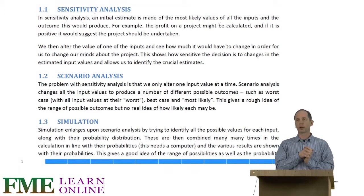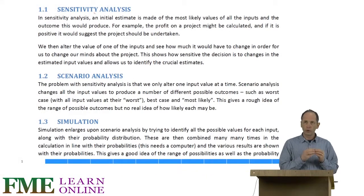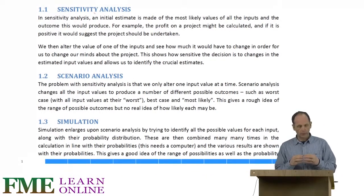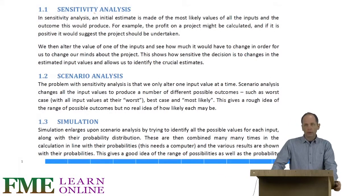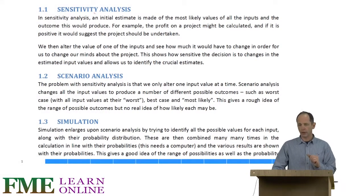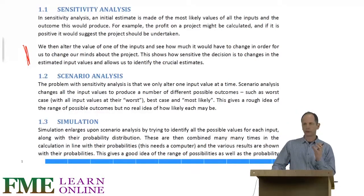For example, we might estimate the profit on a project by looking at the costs and revenues involved. However, what we then need to do is identify which of those inputs are the most crucial ones — the ones which, if they were to change, would quite dramatically change the profit and hence our decision on whether to go ahead with the project. We alter one of the inputs at a time and see how much we have to change it in order to make our investment decision change. That sensitivity analysis allows us to see which inputs the outcome is most sensitive to.